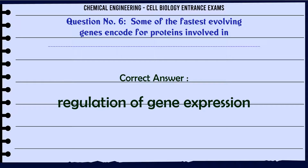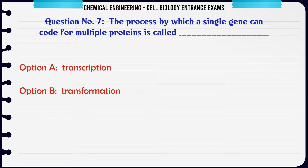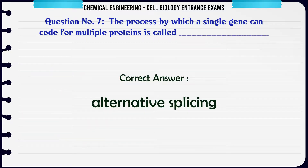The process by which a single gene can code for multiple proteins is called? A. Transcription. B. Transformation. C. Alternative splicing. D. Sequencing. The correct answer is Alternative splicing.